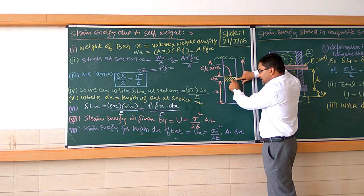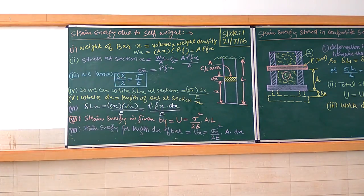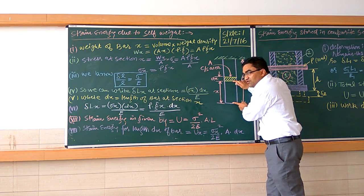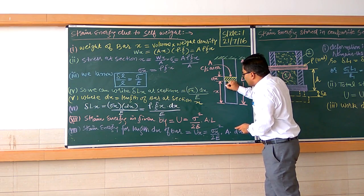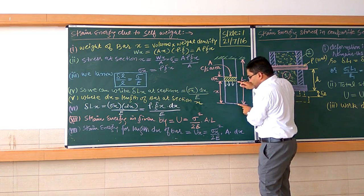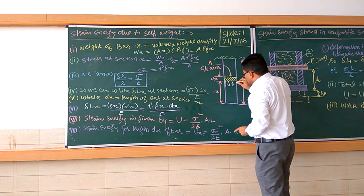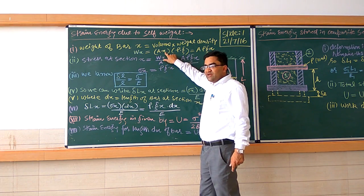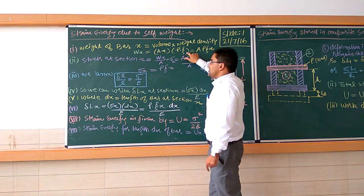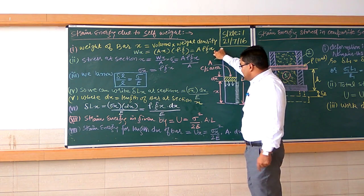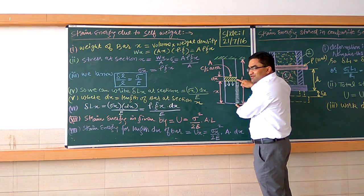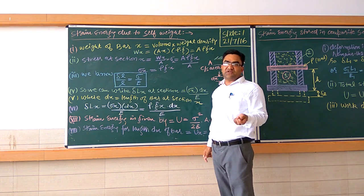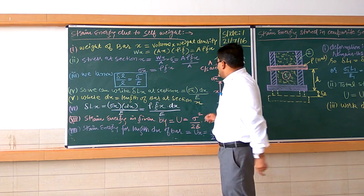At this strip, the weight acting downward will be the weight up to this length only. So the weight of this bar up to the length x can be calculated as A (cross-sectional area) into length x — that is your volume — into ρ into g. So W_x = A·x·ρ·g. This is the weight of the bar up to the length x, which is applicable on this strip and will also be responsible for the strain in this strip.